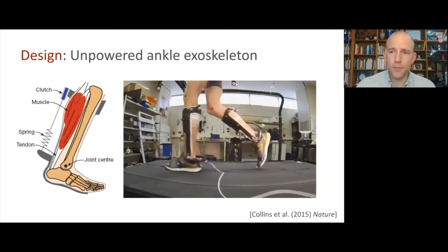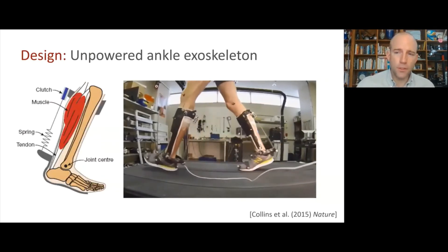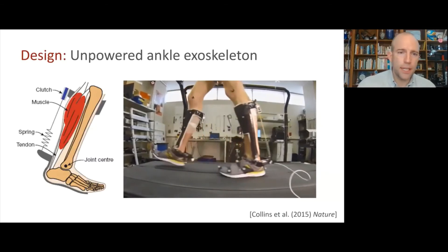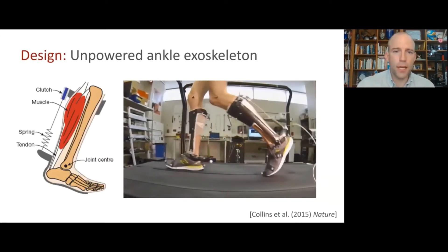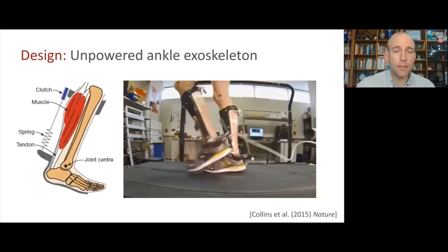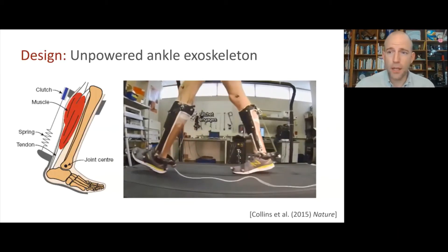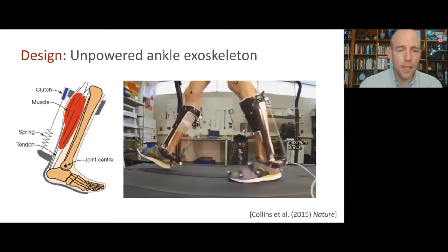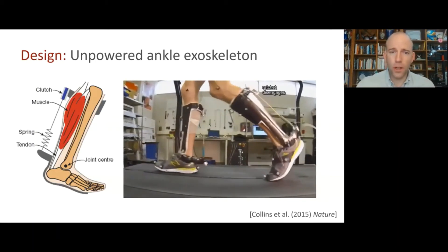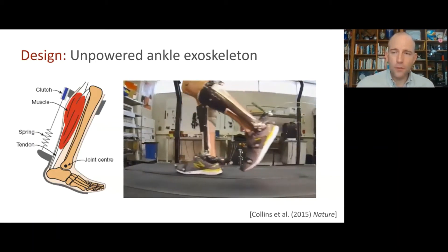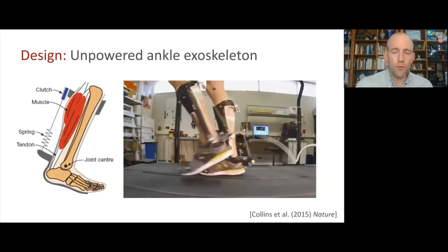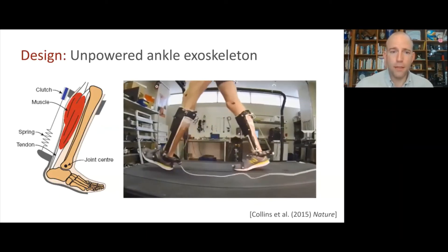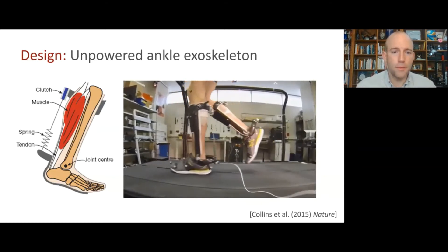As a graduate student, I shifted more towards exoskeletons and prosthetic limbs to help improve people's mobility. Here you can see some of the same ideas being applied — ankle exoskeletons that use no energy themselves and yet reduce the energy consumption of human walking. And of course, to make these things work, we need really robust systems that are very lightweight so we don't impede the person too much when they put it on before it starts to give them the benefit.